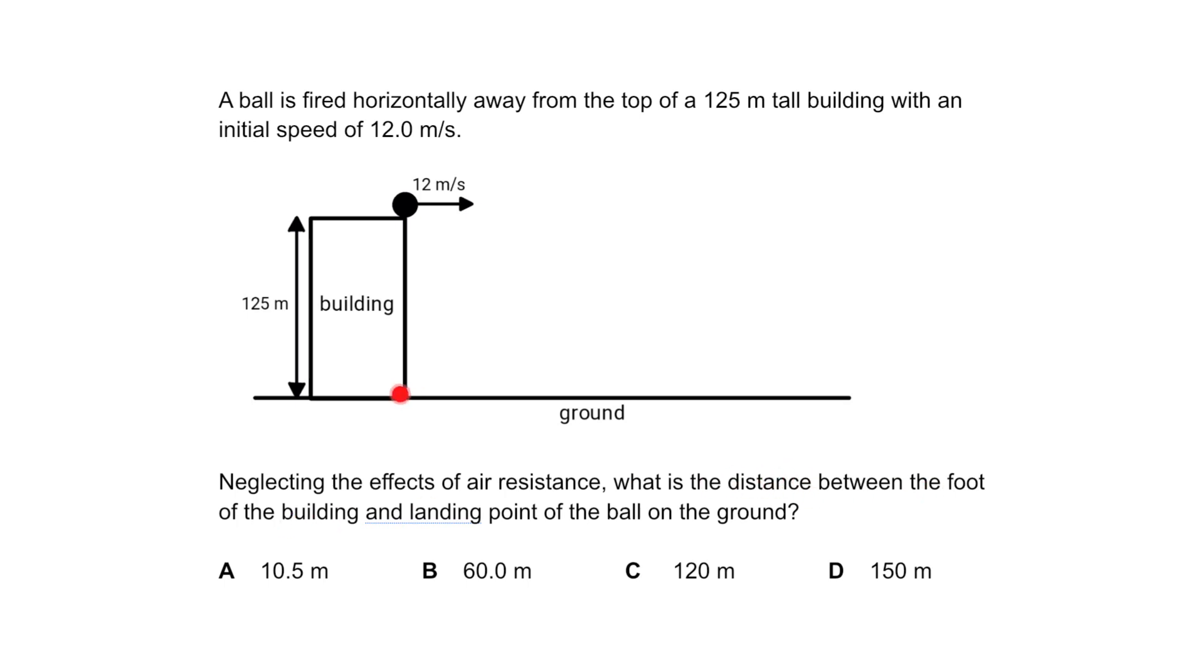If you throw it horizontally from the building, the ball will go this way and land somewhere around here. You need to find this distance. To solve this question, it's useful to consider the motion of the ball horizontally and vertically. Let's consider the vertical component first.